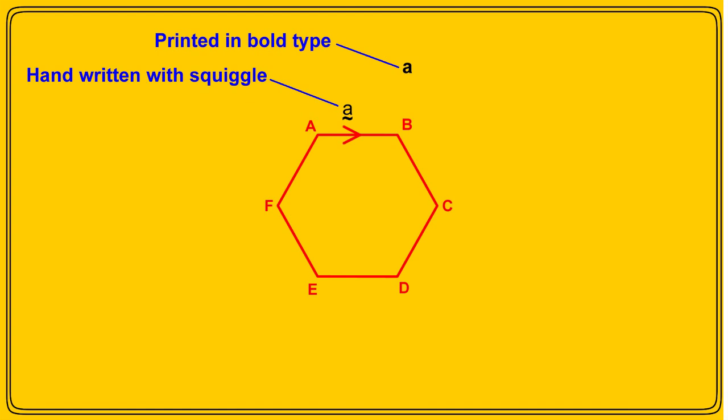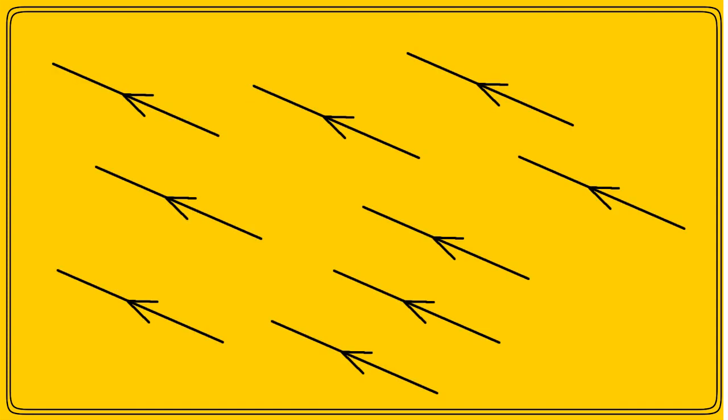Now we know what vectors are, and how we can refer to them, let's take a look at what we can do with them. The first thing to realize is that vectors that are equal in length and point in the same direction are equal vectors, and this will come in extremely useful, as we shall see very shortly.